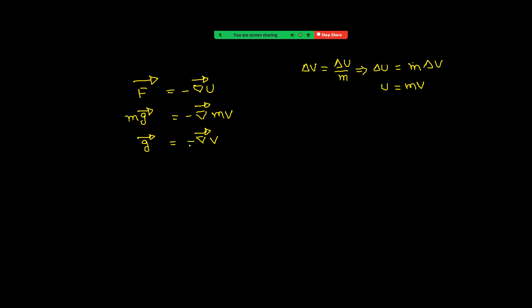If you see the negative sign: along the field, potential decreases. For example, if we drop a body from a height, it moves down. While moving down, its gravitational potential energy decreases. The reason is that its potential is decreasing, and it is converting into kinetic energy.